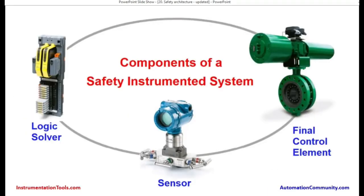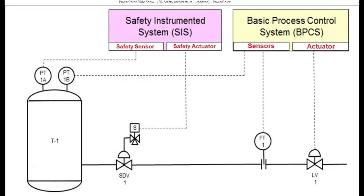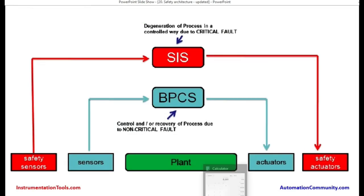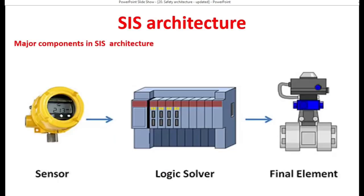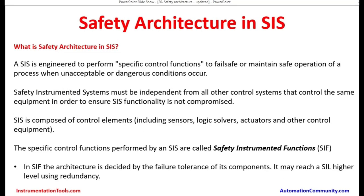In the normal plant, the BPCS is the one controlling the normal process of the plant. The safety system is sitting in the next layer. We have seen about the independent protection layers in earlier presentations. This comes into picture whenever any hazardous conditions arise, meaning that it is acting independently and the equipment protection is ensured.